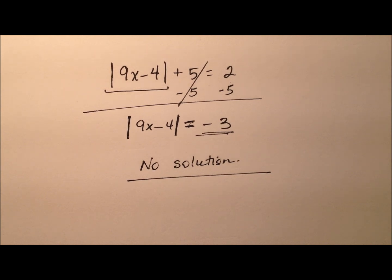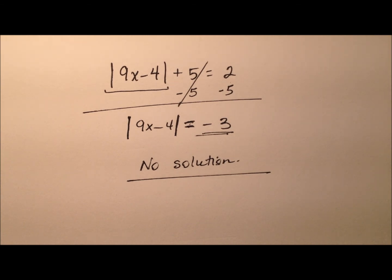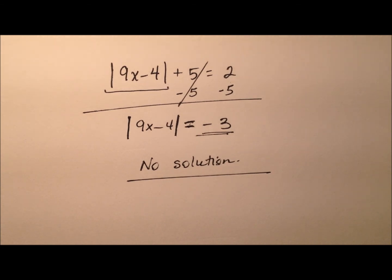So those are three examples for solving absolute value equations. To recap: start by isolating the absolute value expression if it's not already isolated. Then split the equation into two separate equations — one for the positive and one for the negative — and solve them independently. Be sure to check that your solutions work.